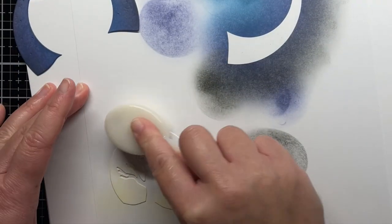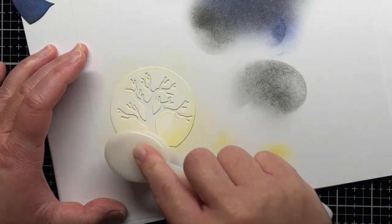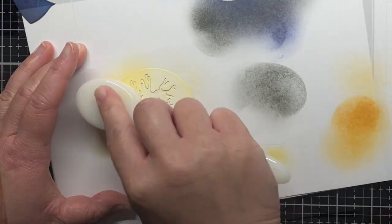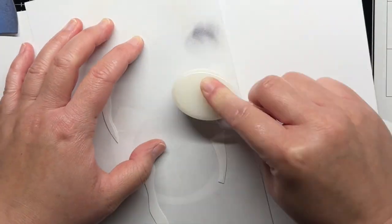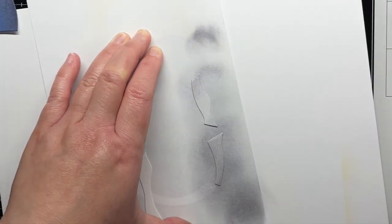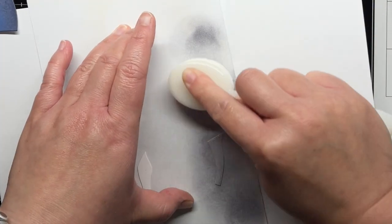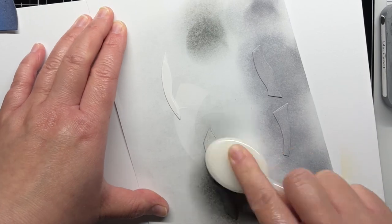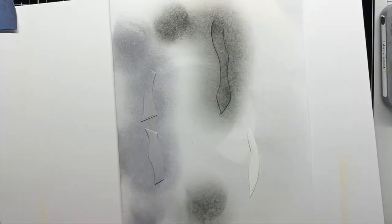I blend Scattered Straw and Dried Marigold randomly over the moon. Then I use Hickory Smoke and Black Soot for the ground pieces. I use a light hand with Black Soot for one of the ground pieces and a heavier hand for the last one.